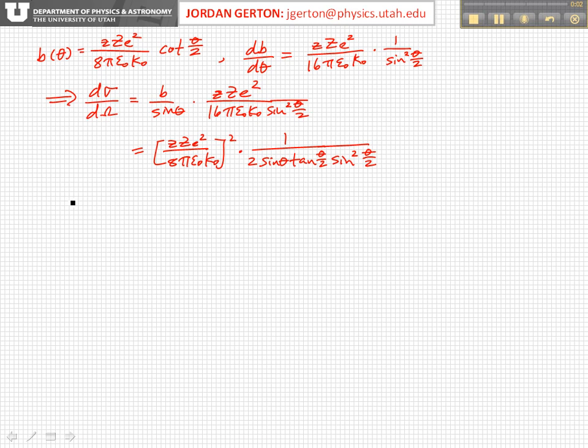Now we can use a trigonometric identity here that sine of theta equals 2 sine theta over 2 times cosine theta over 2.